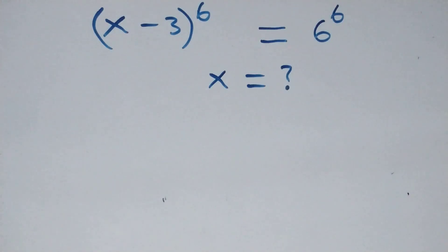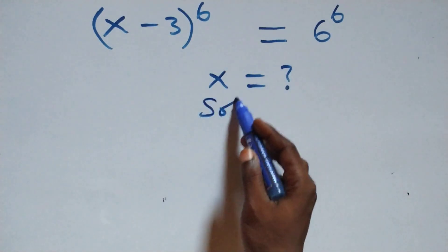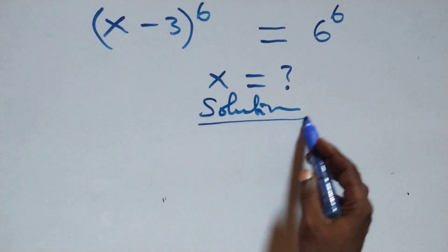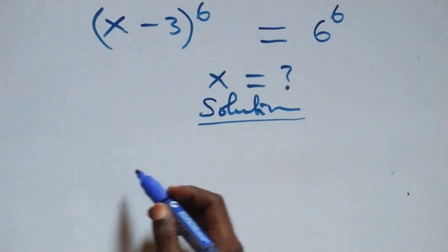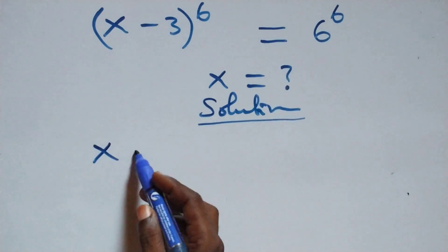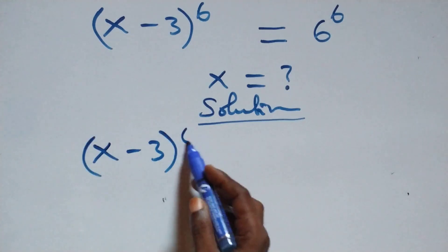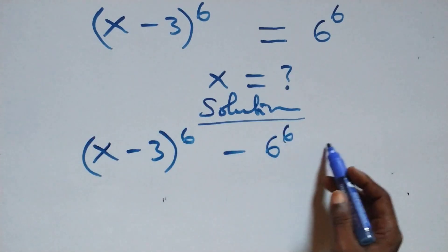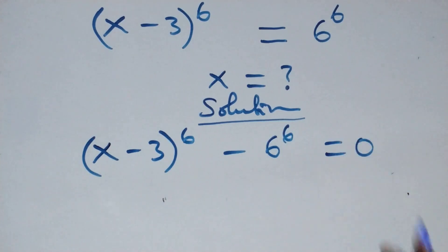Hello, you're welcome. How to solve this nice exponential equation. What we have here: we take 6 raised to the power 6 to the left-hand side, and we have x minus 3, all raised to the power 6, minus 6 raised to the power 6, then equals 0.